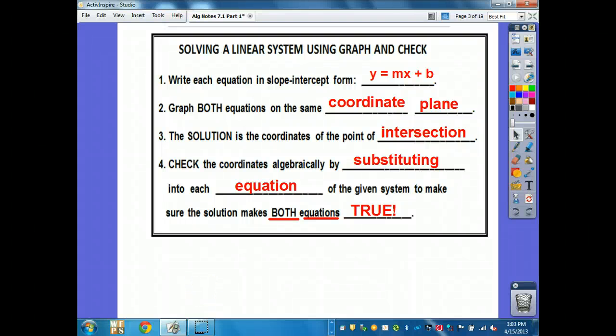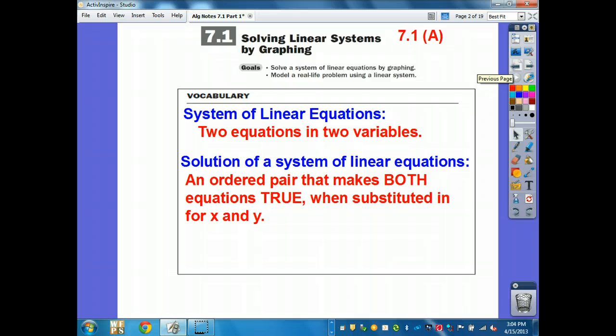Today we are starting chapter 7 out of the algebra chapter 1 book. Section 7.1, solving linear systems by graphing. What we're going to do today, we don't have any rearranging to do in 7.1a. All the equations that you get are in slope-intercept form, which is y equals mx plus b. They're already in graphing form for you, so you don't have to rearrange. Tomorrow we'll rearrange.